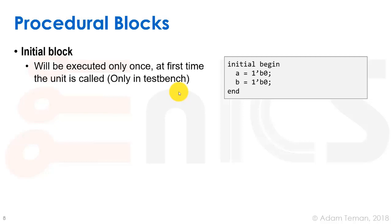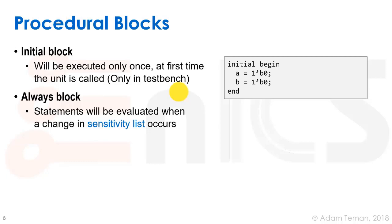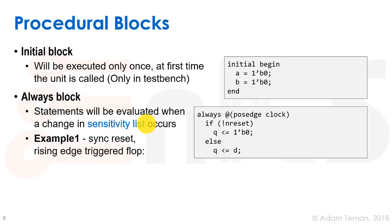To actually make things happen in hardware we use what we call an always block. In an always block, statements are evaluated when a change in the sensitivity list occurs. The sensitivity list specifies which signals cause whatever is inside a block of code to be evaluated. So an always block followed by the sensitivity list — anything in that list causes the simulator to execute the code inside.